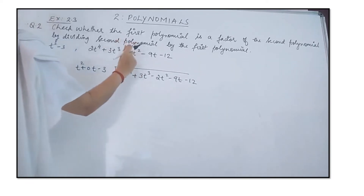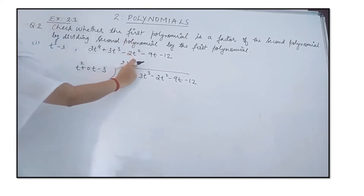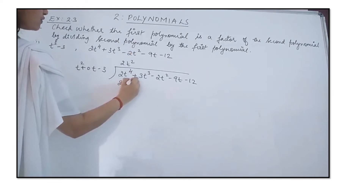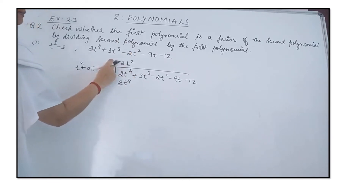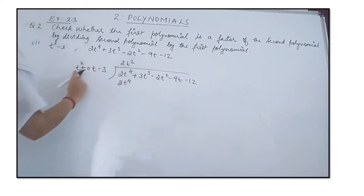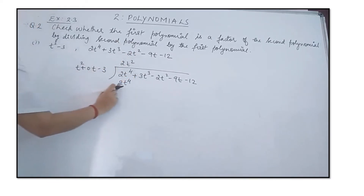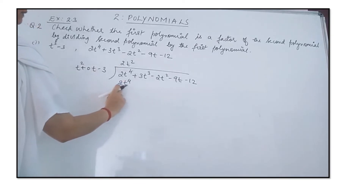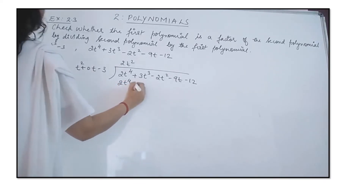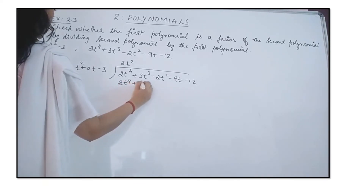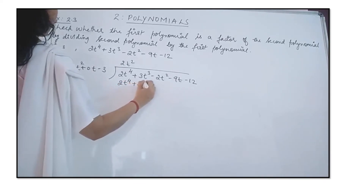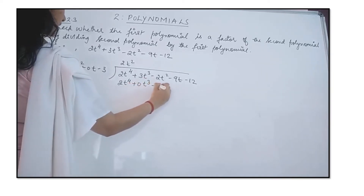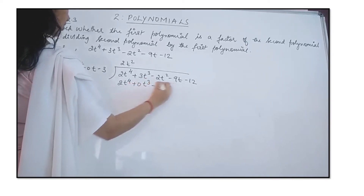That 2t² is written as the quotient. Multiplying this quotient with the divisor gives 2t⁴ + 0t³ − 6t².